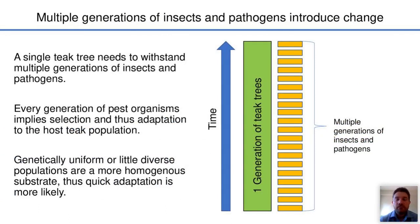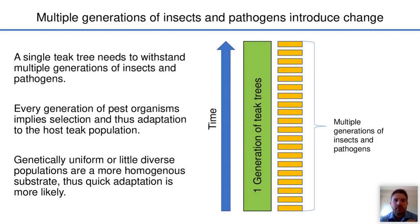One factor that can introduce change in teak populations is generations of insects and pathogens. A single teak tree needs to withstand multiple generations throughout the tree population's lifetime, and every generation of pest organisms implies selection and thus adaptation to the host teak population. Genetically uniform or little diverse populations are a more homogeneous substrate, and thus quick adaptation of pests is more likely in such populations.